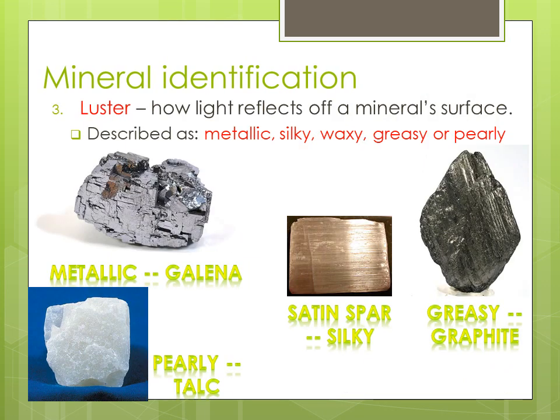Number three, luster: this is how light reflects off of a mineral's surface. We have a couple of ways to describe this reflection. We have metallic, which is the mineral galena; pearly, which is the mineral talc; silky, like satin spar; and greasy, like graphite. So this is another way to identify different minerals.